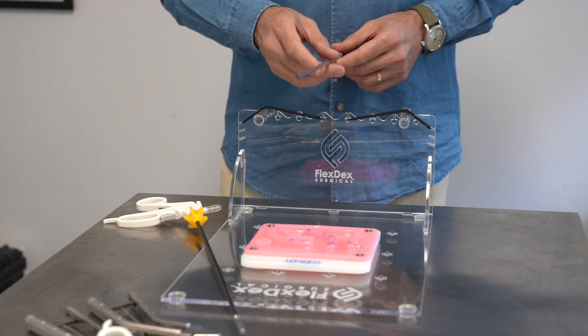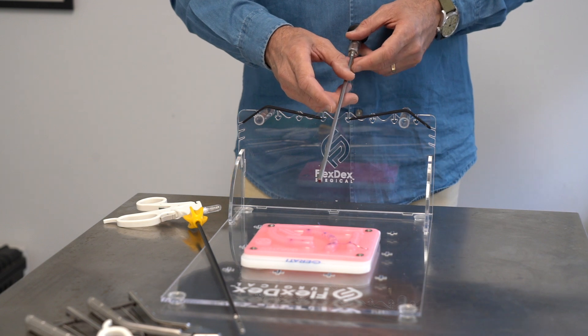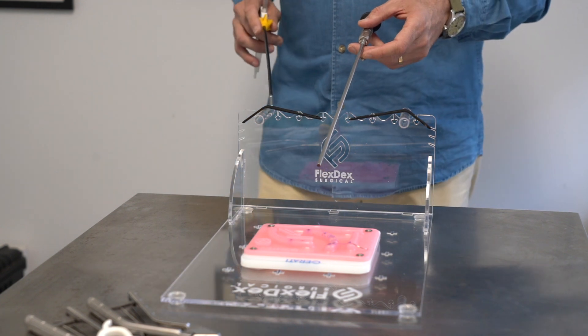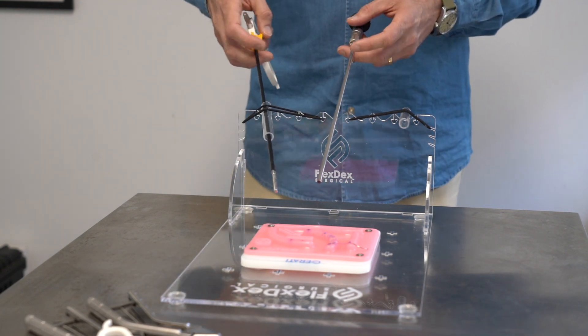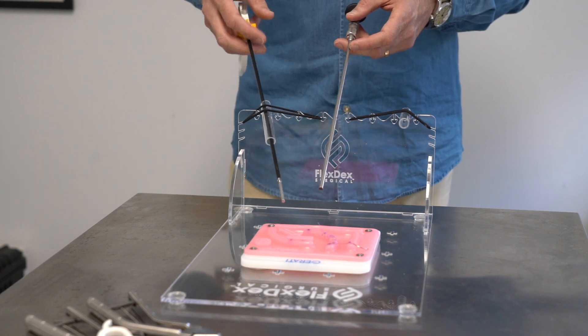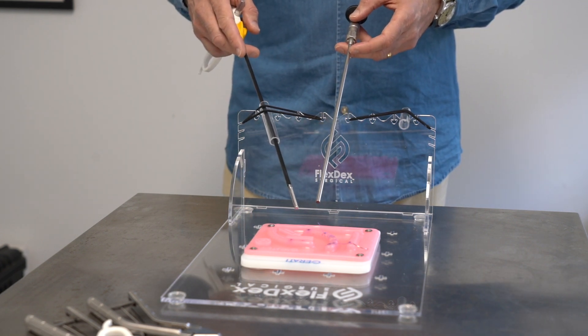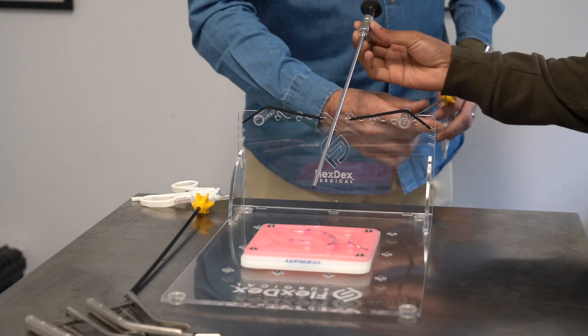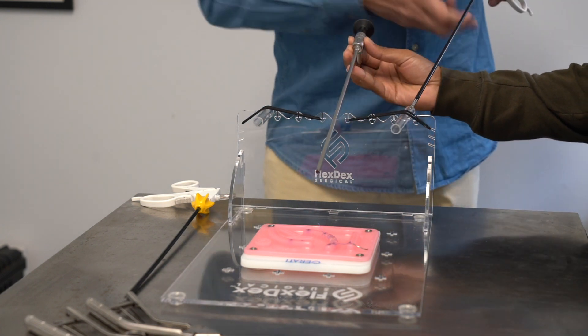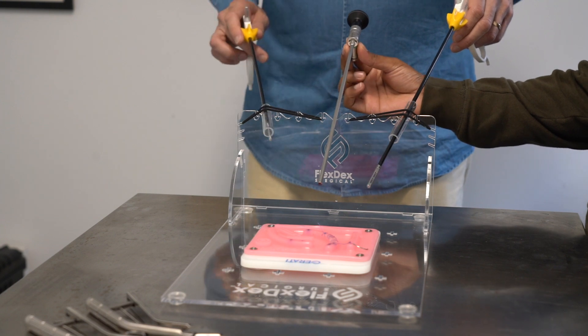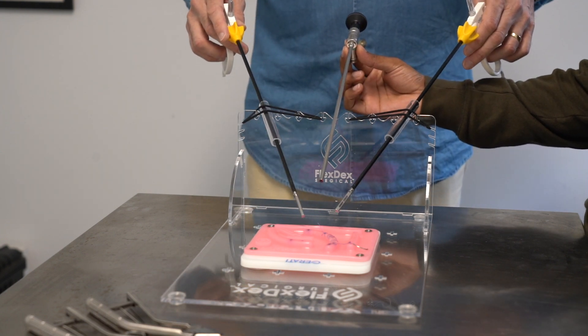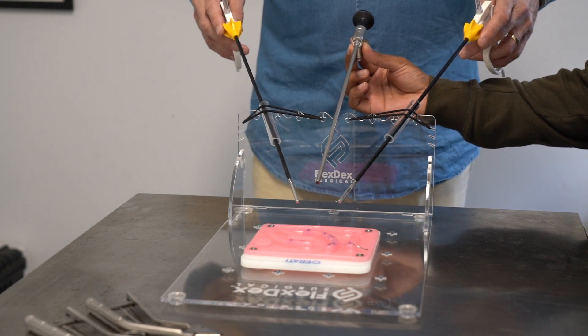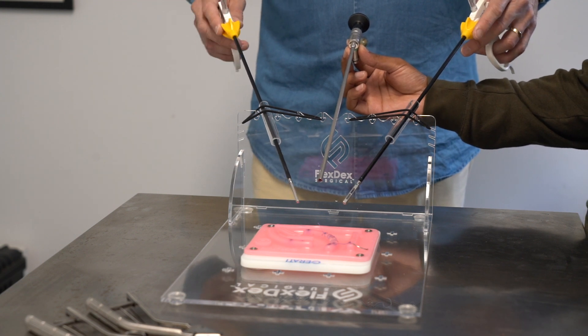Triangulation is a really important concept with laparoscopic surgery. The idea with triangulation is that you have the telescope or camera in the middle and then your instruments on either side, equidistant from the telescope, so that your movements and the target are always in the center of your laparoscopic field. When the scope is pointing at the target and the instruments are on either side, it gives you the correct orientation so that your movements are intuitive.